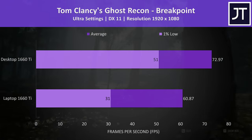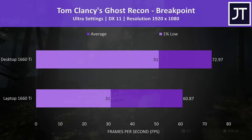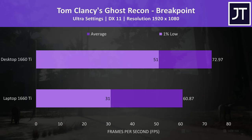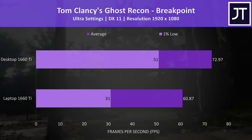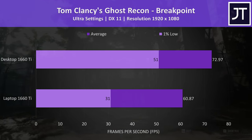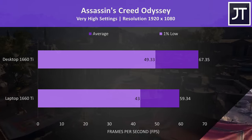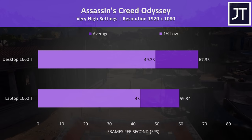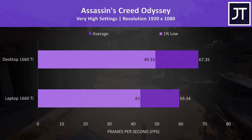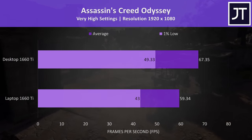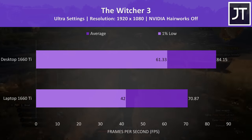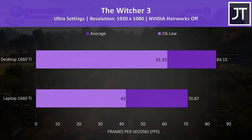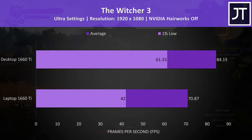Ghost Recon Breakpoint was tested using the game's benchmark tool. There was a larger 20% improvement to average FPS here, but a much higher change seen to 1% low performance — granted that may be due to the CPU difference. Assassin's Creed Odyssey was also tested with the built-in benchmark, and there was a lower 13% higher average frame rate with the desktop graphics. The Witcher 3 was tested in the same area of the game with both machines, and there was a fairly big 19% improvement with the desktop graphics.